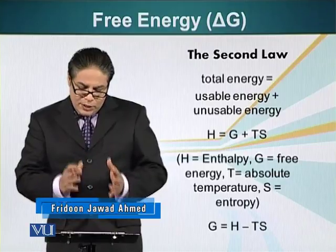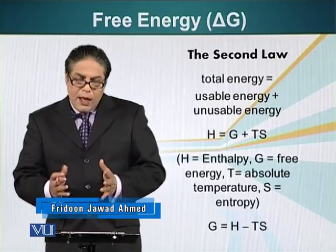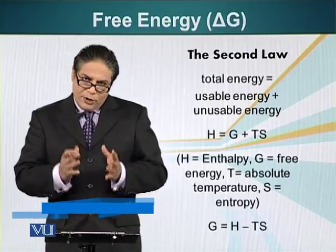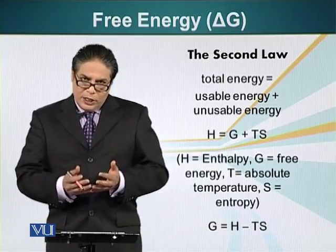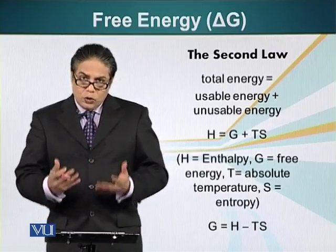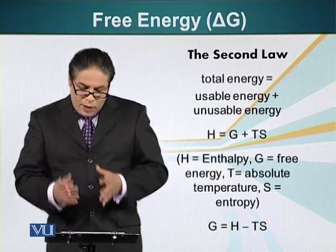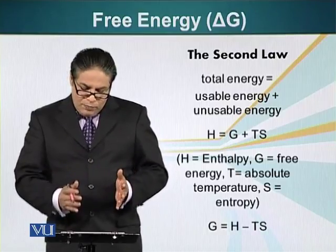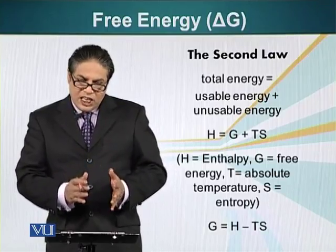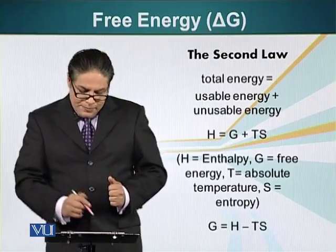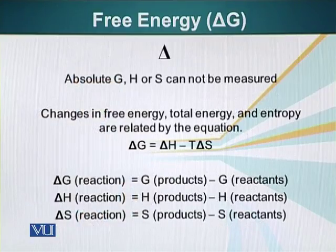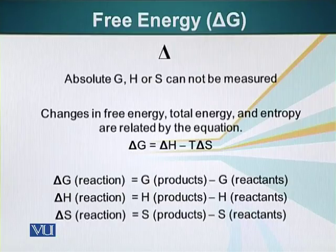H equals G plus TS. Since we are interested in the usable energy — the energy that can be used to do useful work — we rearrange this equation, which becomes G equals H minus TS. Since we cannot measure these terms in absolute value, we can measure the change in the value of G, H, and S.